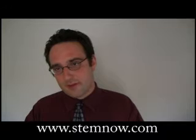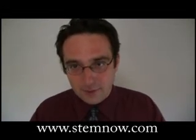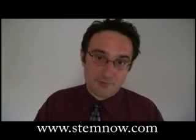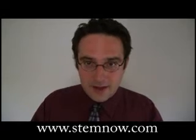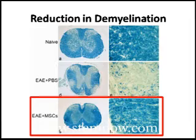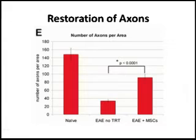Looking at myelination, the cervical spine can be stained with the dye Luxol Blue. In the top panel, control mice without MS-like disease show a lot of blue, indicating heavy myelination. When the animal has the EAE autoimmune attack against myelin, much less myelin is visible. When stem cells are given, significantly more myelin is restored. This was associated with a reduction in CNS lesion size as well as restoration of axon numbers.